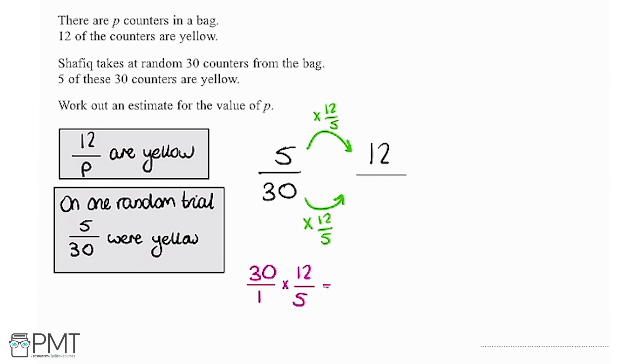So now what we've got on the bottom we've got 5 times 1 which is just 5, and on the top we've got 30 times 12. Now because this is just a fraction, I'm actually going to write this out in a more complicated way but hopefully you'll see where I'm going with it.